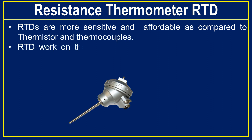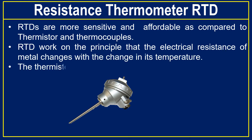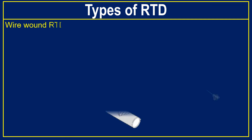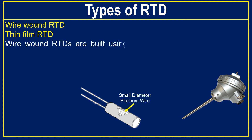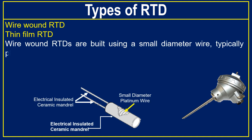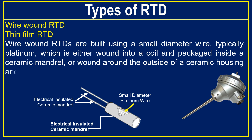RTDs work on the principle that the electrical resistance of a metal changes with the change in its temperature — the same principle as thermistors. There are two main types of RTD: wire wound RTD and thin film RTD. Wire wound RTDs are built using a small diameter wire, typically platinum, which is either wound onto a coil and packaged inside a ceramic mandrel, or wound around the outside of a ceramic housing and coated with an insulating material.